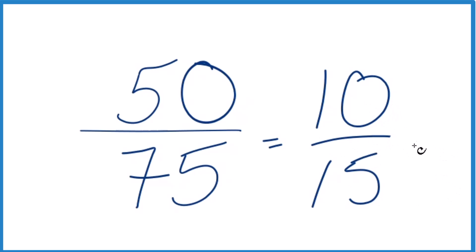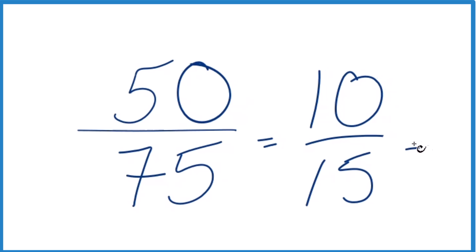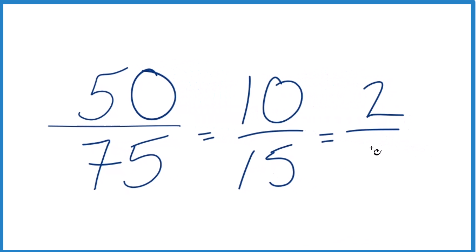But we could actually simplify this further, because 5 goes into 10 two times, and it goes into 15 three times. So 50/75, when we simplify that down to lowest terms, we get 2/3.